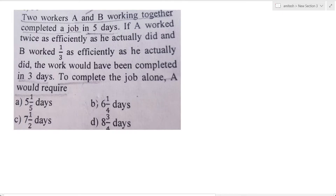Do workers A and B working together complete a job in 5 days? If A worked twice as efficiently as he actually did and B worked 1/3 as efficiently as he actually did, the work would have been completed in 3 days. To complete the job alone, A would require?